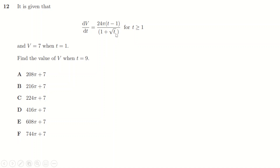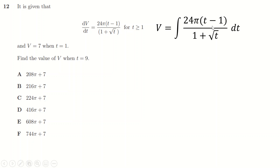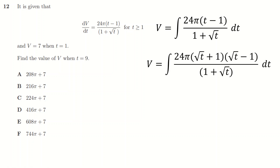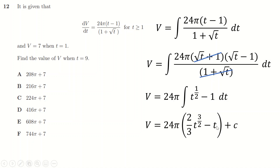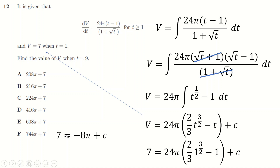Question twelve: this integral looks difficult until you realize (√t - 1) is a difference of two squares: (√t + 1)(√t - 1). The denominator then cancels with part of the numerator, giving a simple integral. Moving the constant out, writing √t as t^(1/2), and integrating: raise the power to 3/2, divide by 3/2 (same as multiplying by 2/3), and integrate the constant t. Don't forget +C.